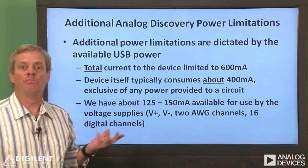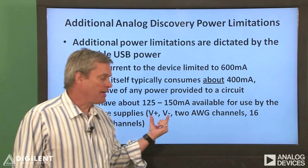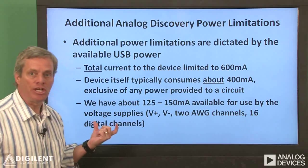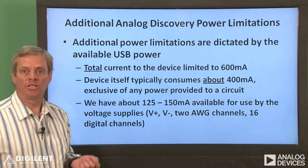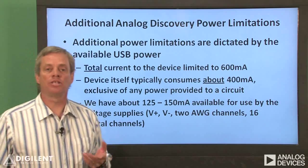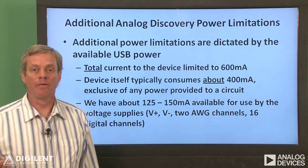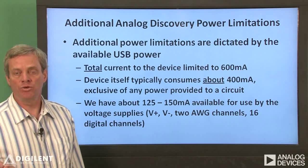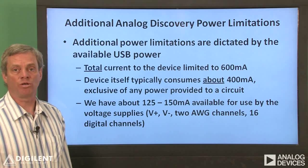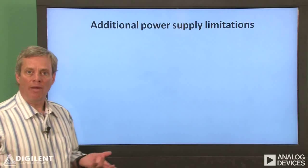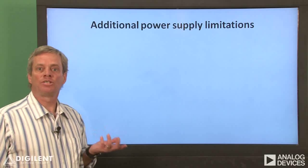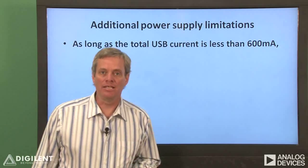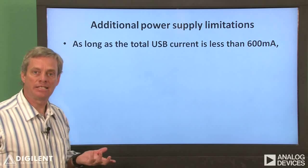This current allocation is shared among all the power supplies on the device: V plus, V minus, the two analog waveform generator channels, and the 16 digital channels. How the available power is distributed depends on the circuits you connect to the Analog Discovery. In addition to the overall power limitation, there are additional current limitations on the individual power supplies, and these are effective even if the total current provided to the device is less than 600 milliamps.